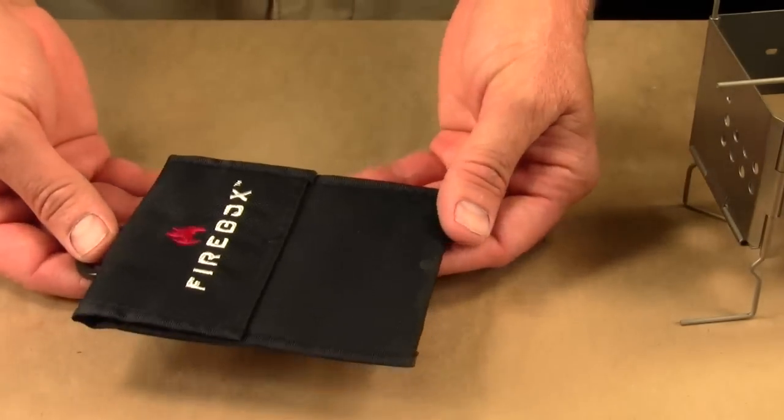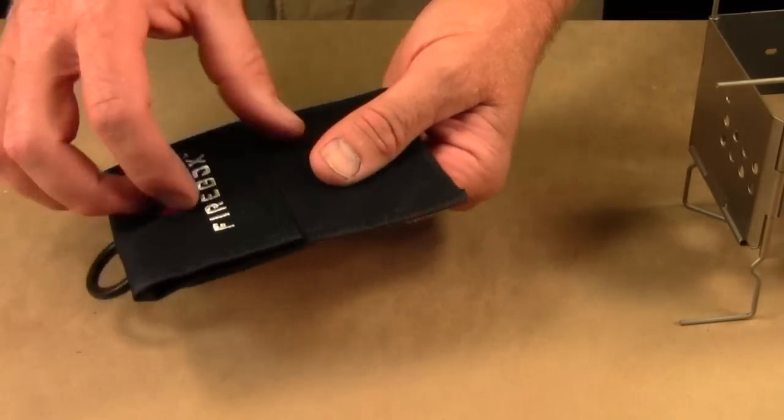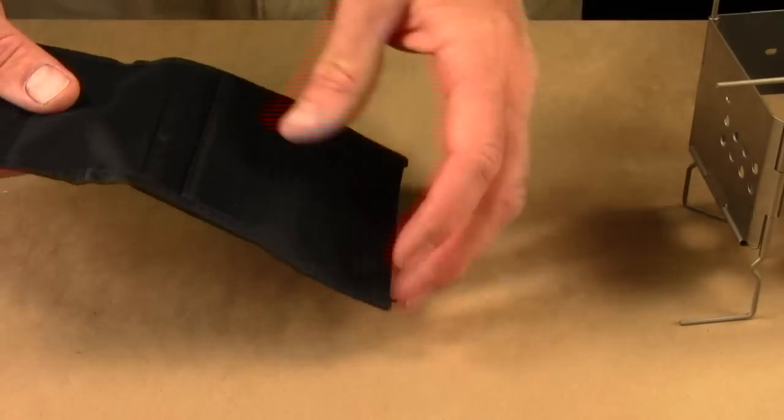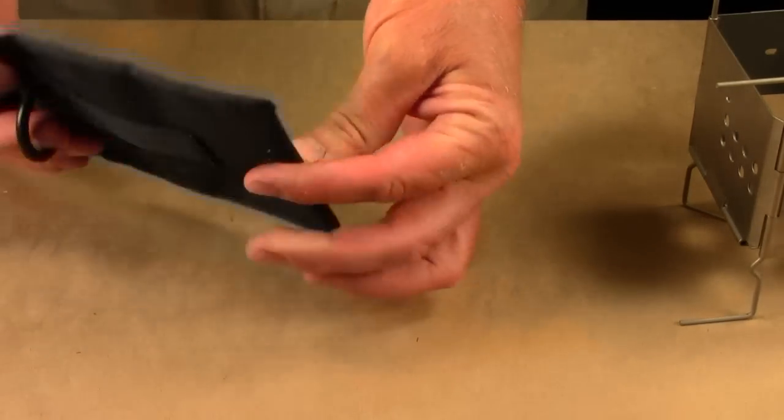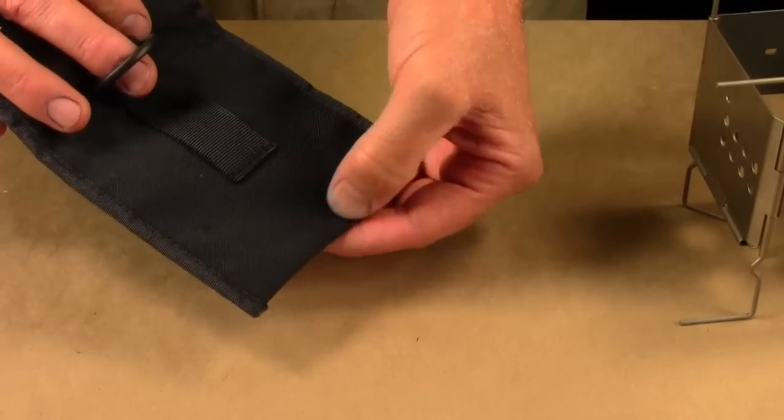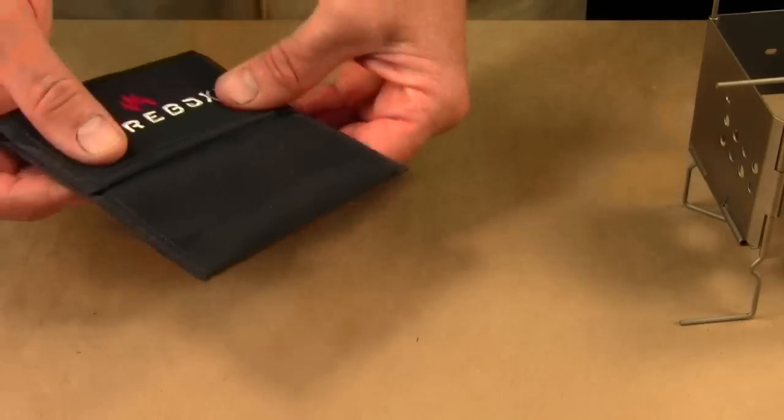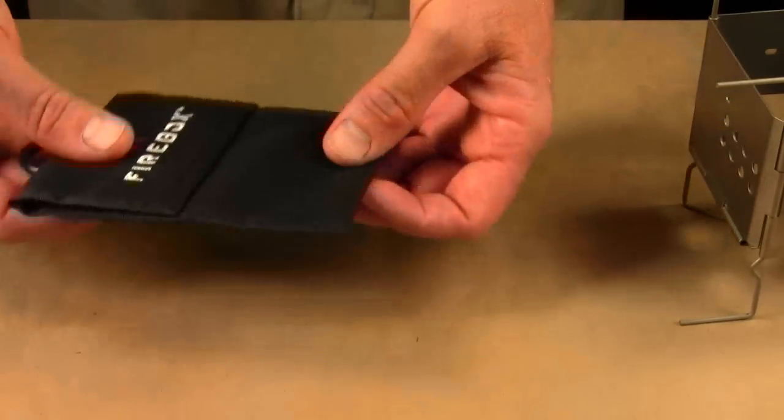Some other optional accessories are the cases that are available. So this is the double layer Cordura case. And so this has actually two layers of this 500 weight material. So it is very durable, but yet it is still very lightweight.